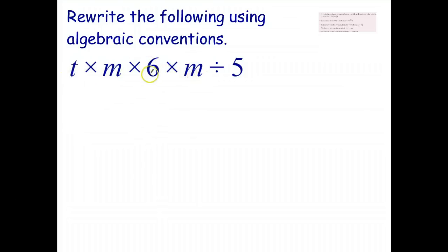The convention is we write the number first. We don't write the multiply signs. We write the variables in alphabetical order. So I've got m times m. Well, m times m can be written as m squared or m to the power of 2 times t.